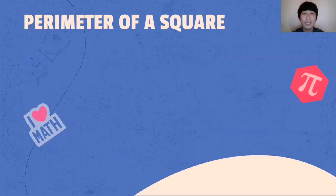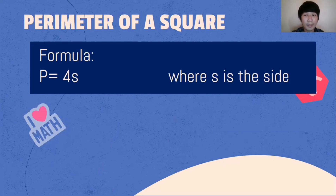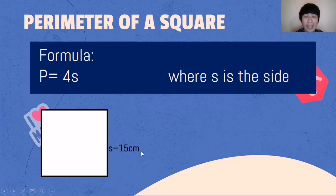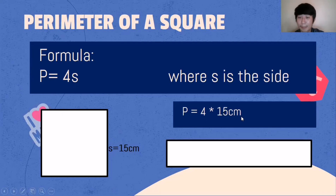I hope you followed. Let's move on to the perimeter of a square. The formula is: Perimeter = 4 × S, where S is the side. As we all know, a square has 4 equal sides, so we just multiply 4 by the given side. For example, the given side is 15 centimeters. 4 multiplied by 15 centimeters is 60 centimeters.